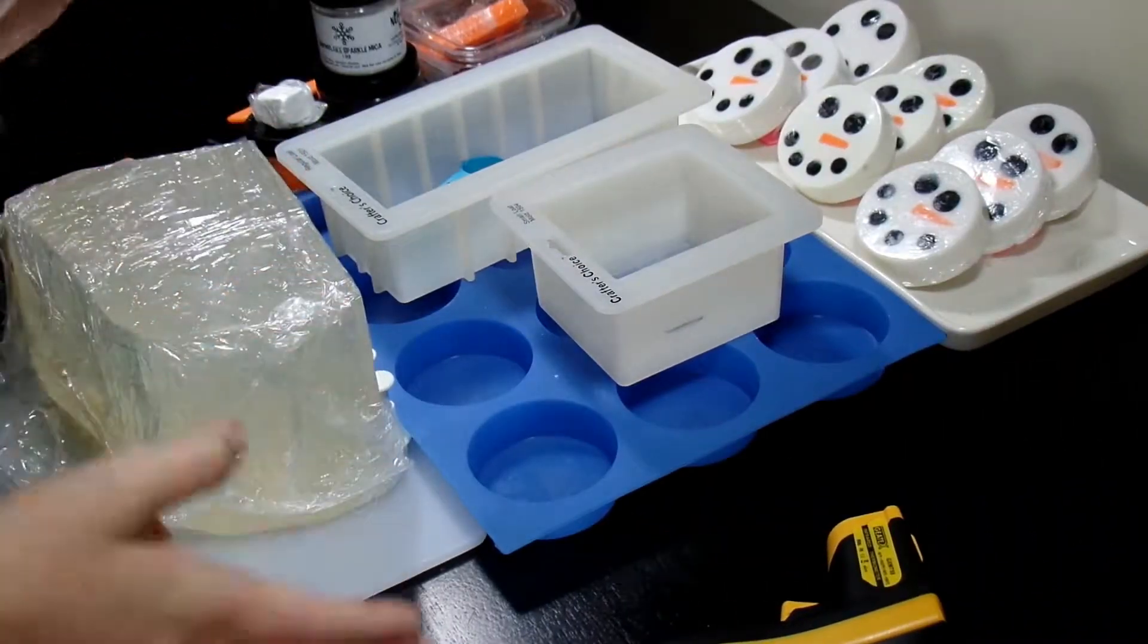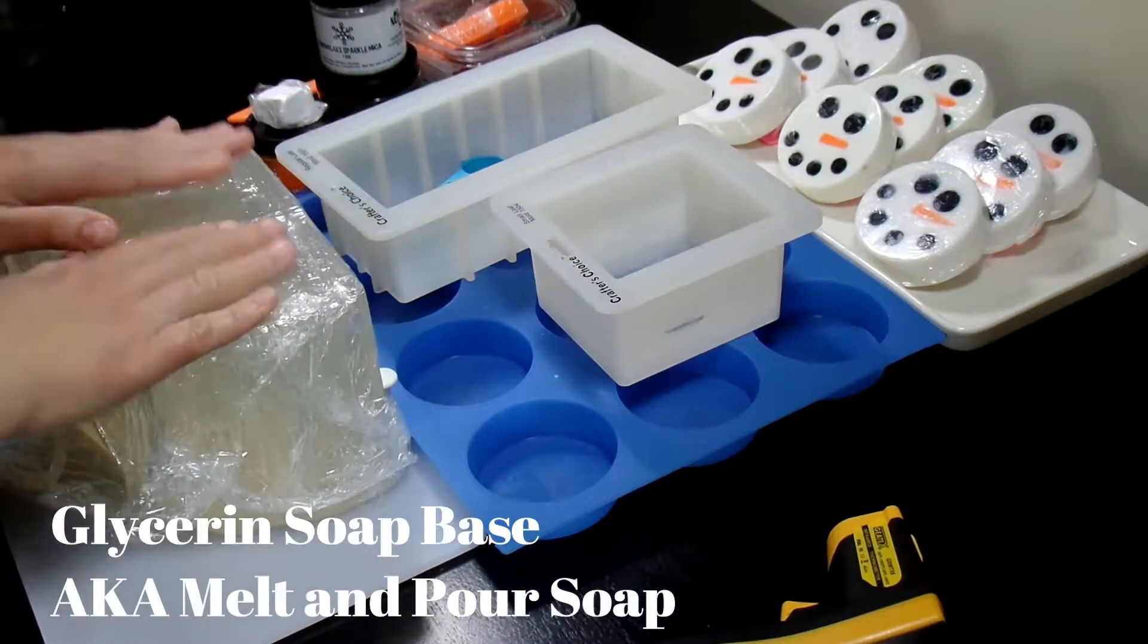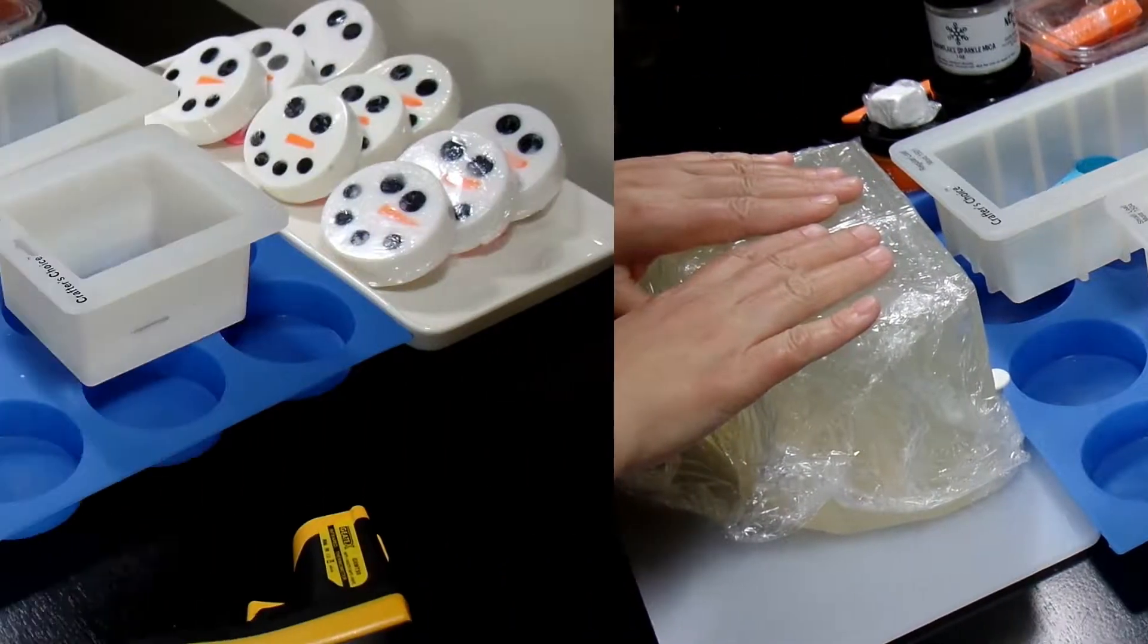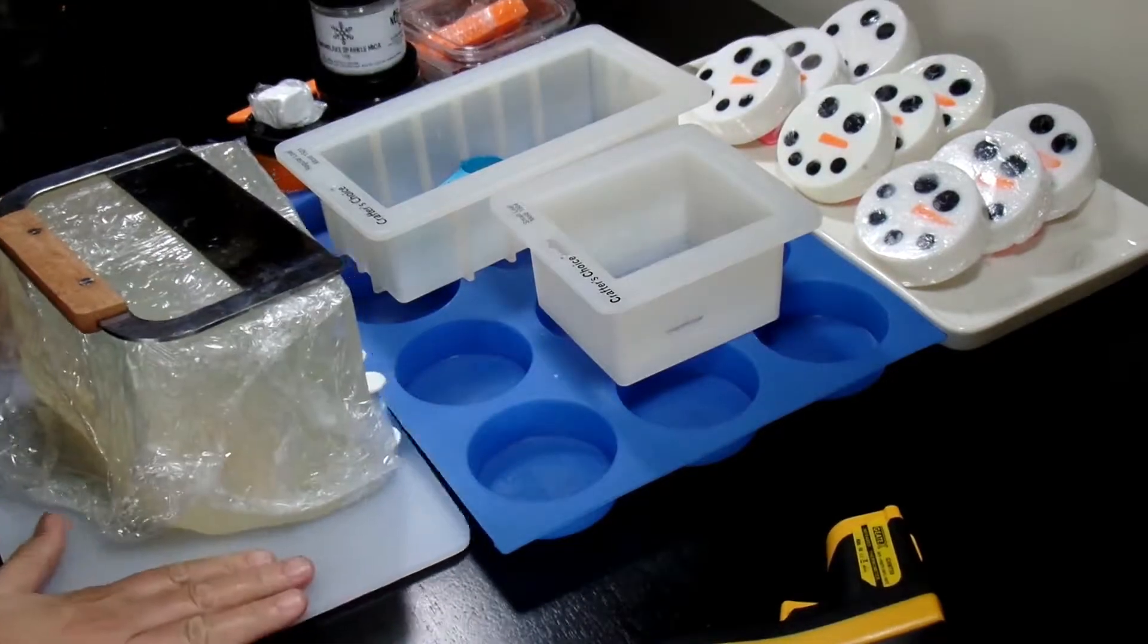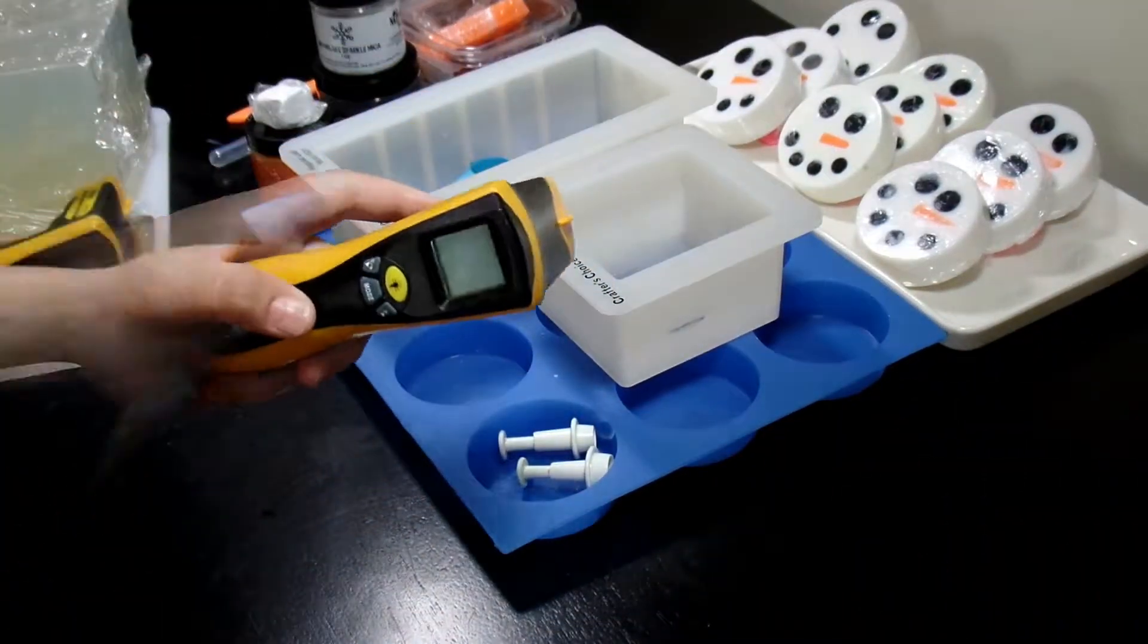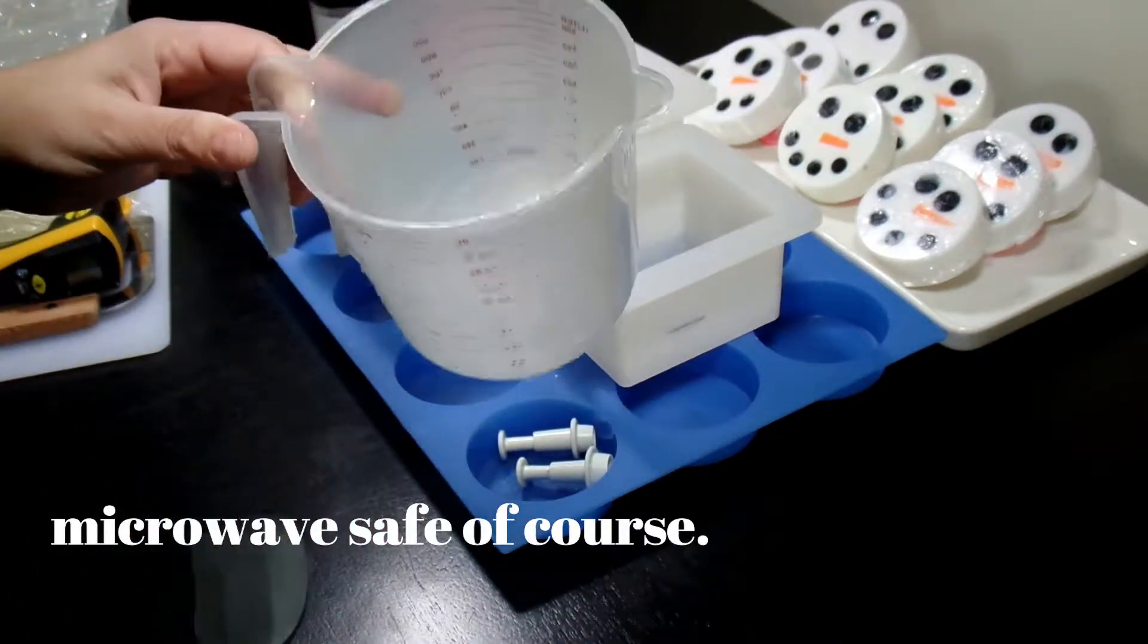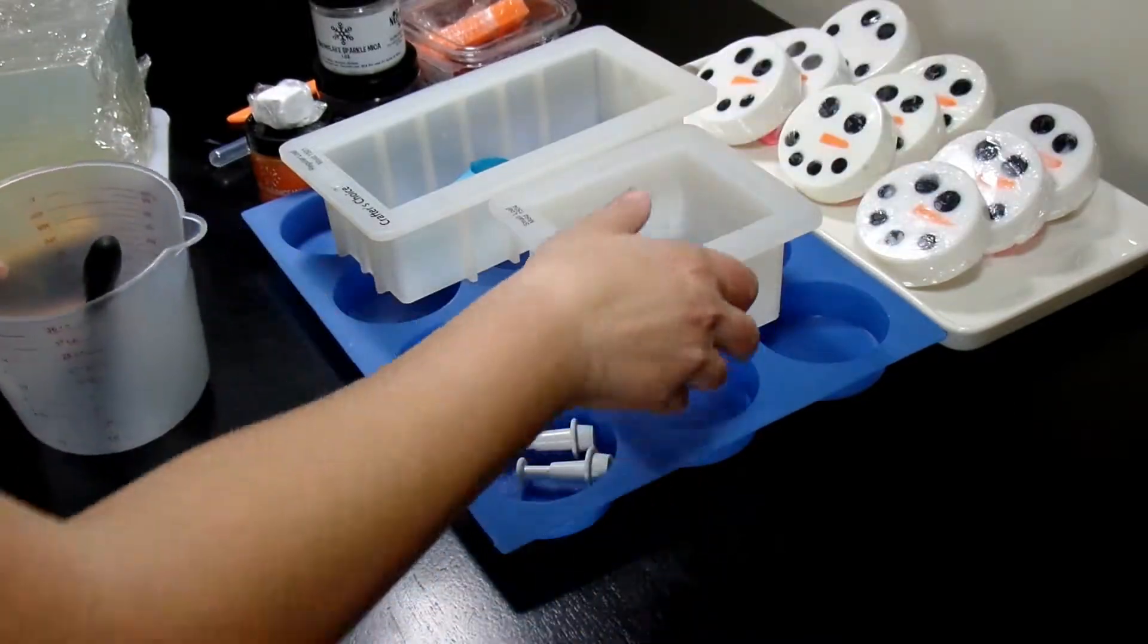First and foremost, you're going to need glycerin soap base. I have clear here. I color mine with titanium dioxide to get the white base that I will need. We're going to need something to cut it with. Here I have my cutter. I have something to cut on. You're going to need a thermometer for checking temperatures. You're going to need something to melt in. I'm just using a plastic container here. Something to stir with.